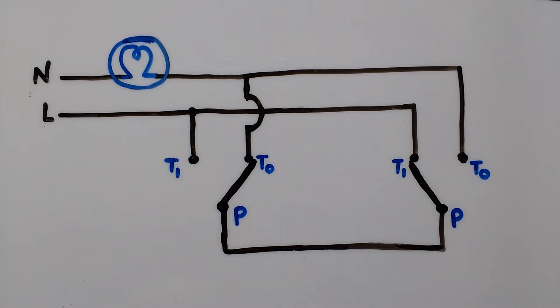How about logic? Let's assign logic 1 to pole connecting T1, logic 0 to pole connecting T0, and status of bulb as output.